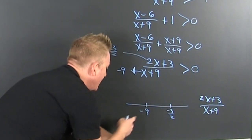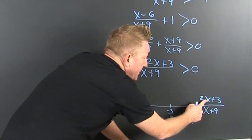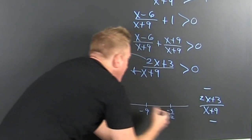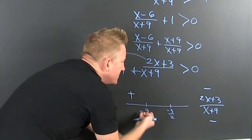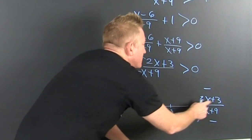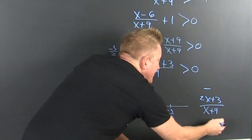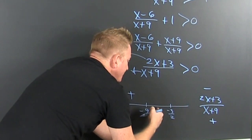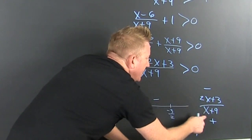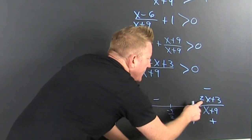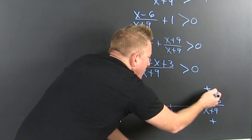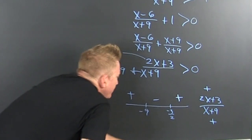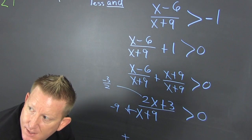I pick a number to the left of negative 9 — how about negative a million. That gives 2(−1,000,000) plus 3, which is negative; and negative a million plus 9 is still negative. A negative divided by a negative is positive. Now I check a number in the middle — how about negative 3. That gives negative 6 plus 3, which is negative; and negative 3 plus 9 is positive. A negative divided by a positive is negative. To the right, I put zero in: the numerator gives 3 — positive; the denominator gives 9 — positive. A positive over a positive is positive.